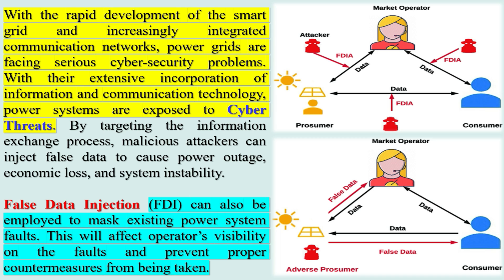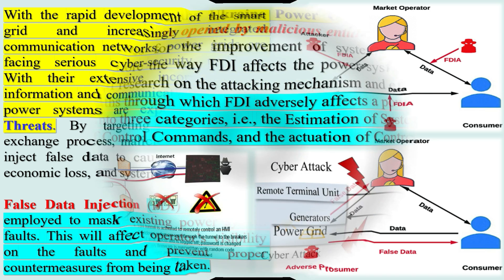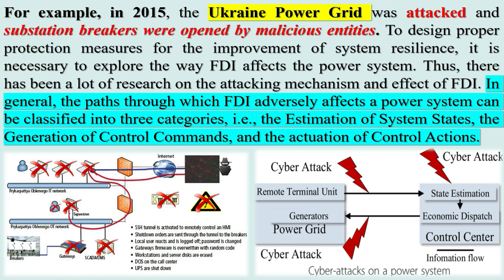False Data Injection (FDI) can also be employed to mask existing power system faults, affecting operators' visibility on the faults and preventing proper countermeasures from being taken. For example, in 2015, the Ukraine power grid was attacked and substation breakers were opened by malicious entities. To design proper protection measures, it is necessary to explore the way FDI affects the power system.